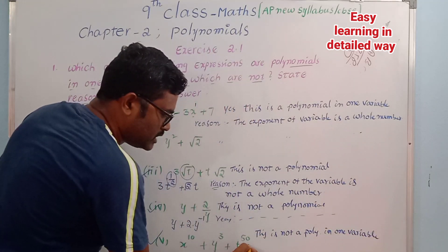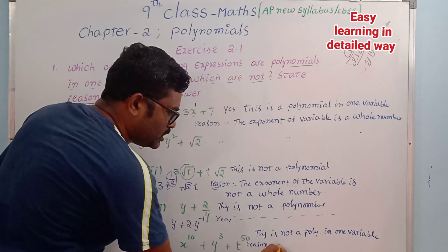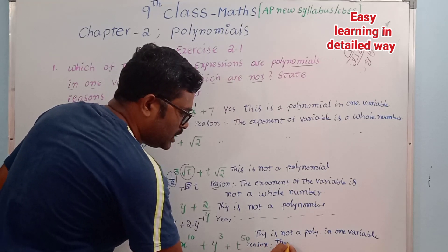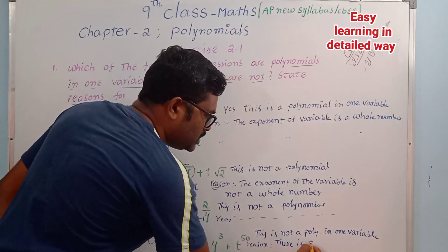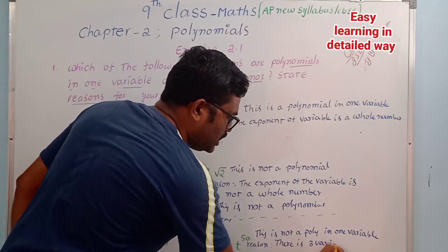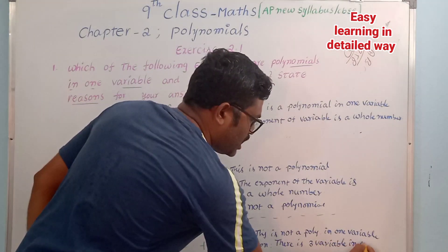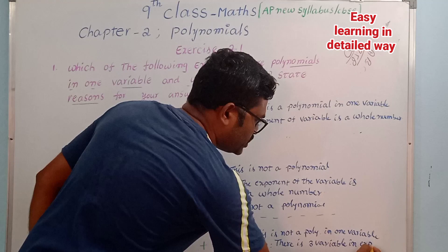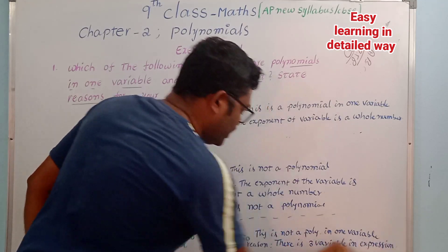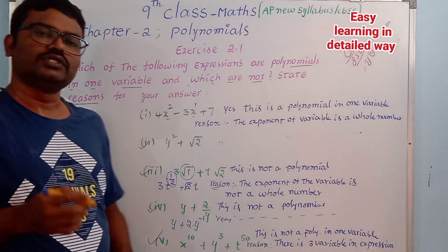The reason is that there are three variables in the expression. Since a polynomial in one variable must have only one variable, this expression with three variables does not qualify.